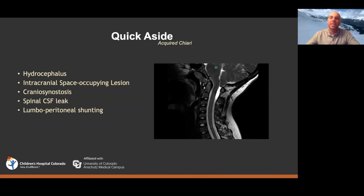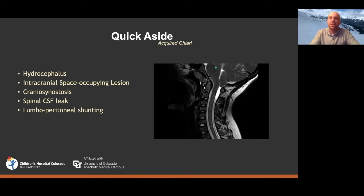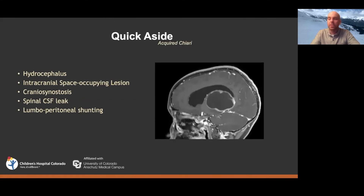Things that can commonly lead to an acquired Chiari include hydrocephalus that pushes the cerebellum down, some other space-occupying lesion in the brain, craniosynostosis — which squeezes from the top and is typically seen in young babies — and a spinal CSF leak, including a spontaneous occult one or a controlled CSF leak such as lumbo-peritoneal shunting. This scan is actually from a kid we started taking care of last week. He has what looks like a Chiari malformation, but when we scan his head, he has a big tumor — that's the cause.